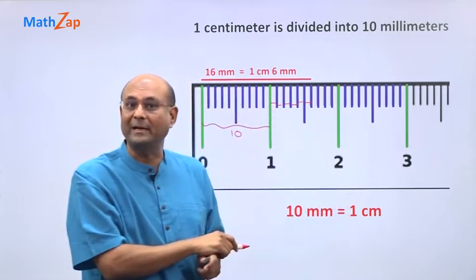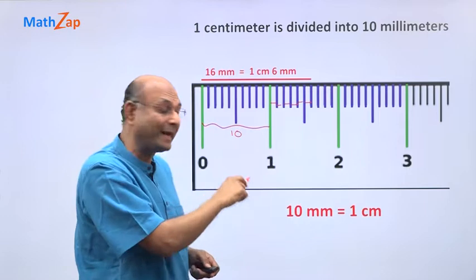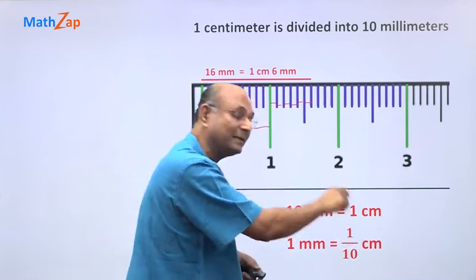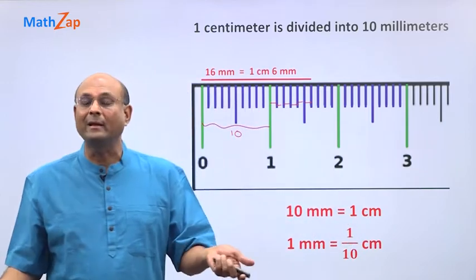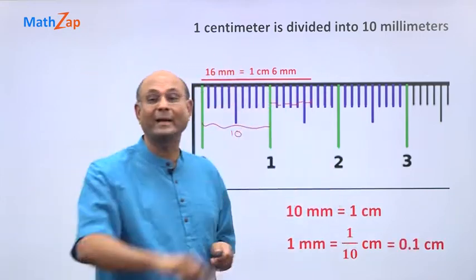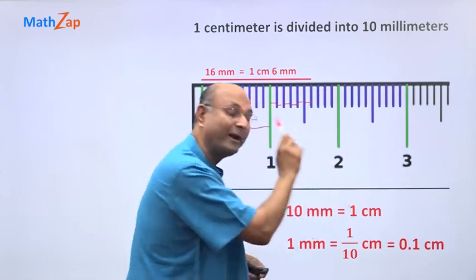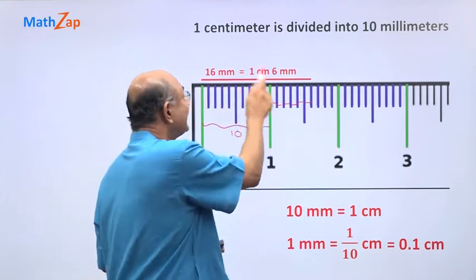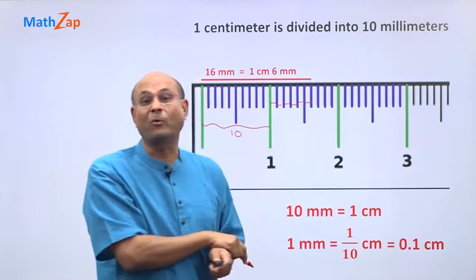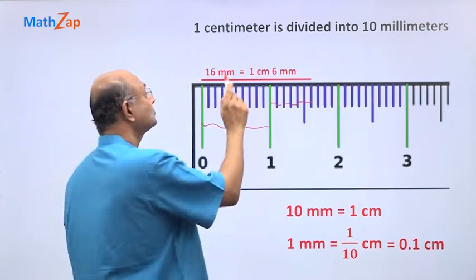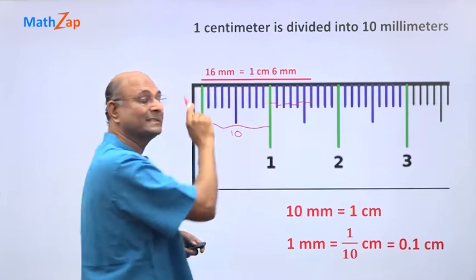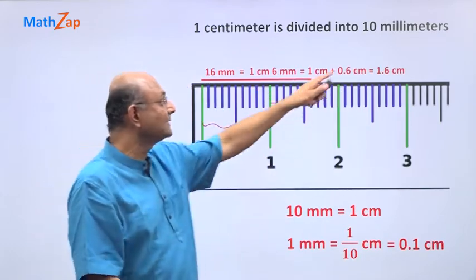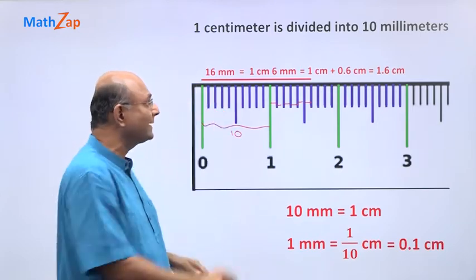Since 10 millimeters is 1 centimeter, 1 millimeter is 1/10 centimeter, which is 0.1 centimeters. So 2 millimeters is 0.2 centimeters, and 6 millimeters is 6 times 0.1 = 0.6 centimeters. Therefore, 1 centimeter 6 millimeters equals 1 centimeter plus 0.6 centimeters, which is 1.6 centimeters. So 16 millimeters equals 1.6 centimeters.